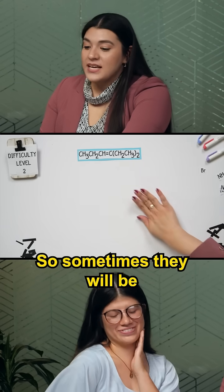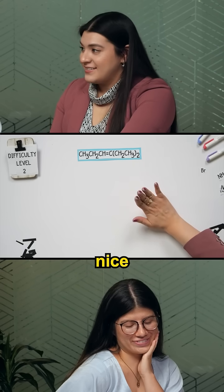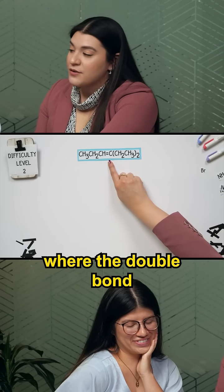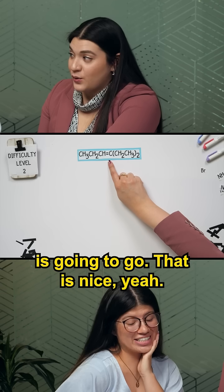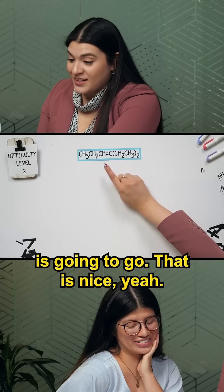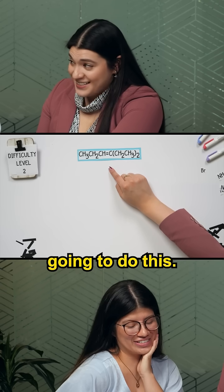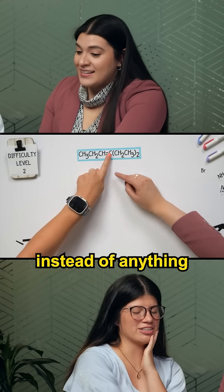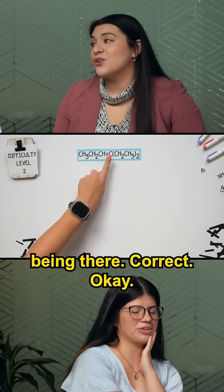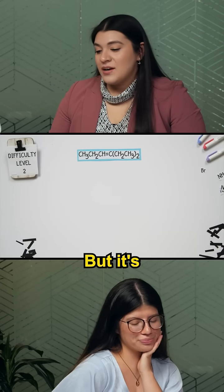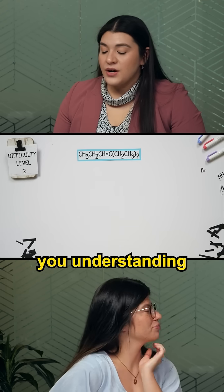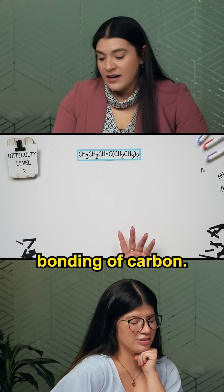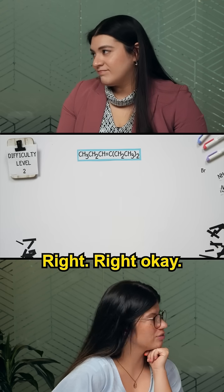Sometimes they will indicate where the double bond is going to go, but they're not always going to do this. Sometimes it would just be a C without anything indicated there. It's about you understanding the different bonding of carbon.